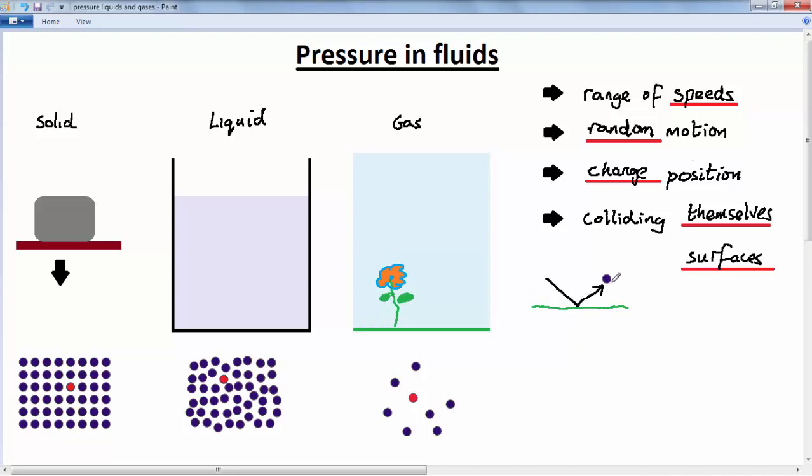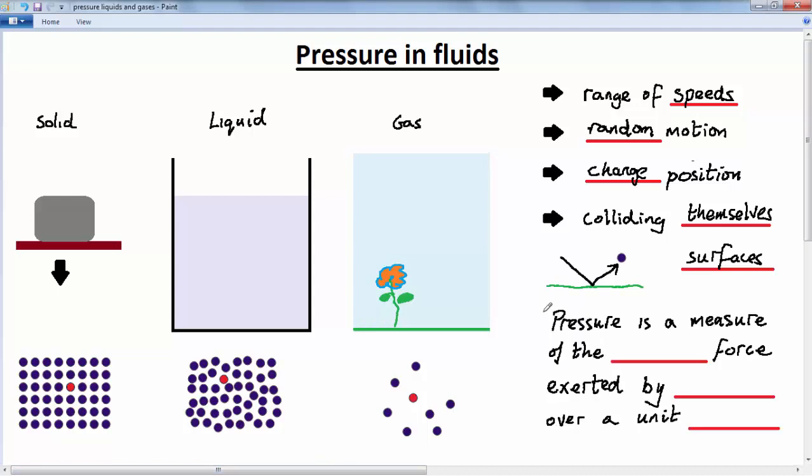Now, the pressure that acts on this leaf, for example, or on the surface of your body when you're at the bottom of a swimming pool, is a measure of the average force exerted by the collisions of all of those particles over a fixed area. So, we can say the pressure in the fluid is a measure of the average force exerted by the particles in the fluid, that's the gas or the liquid, over a unit area.